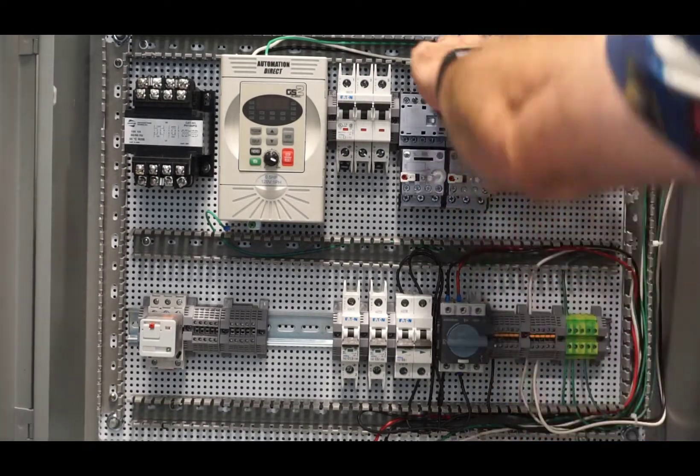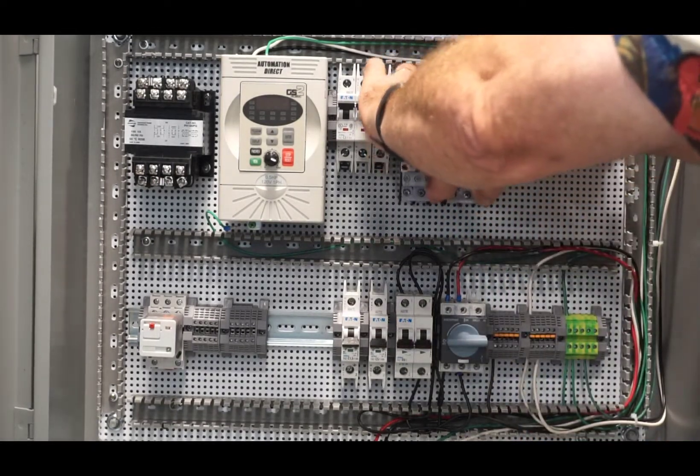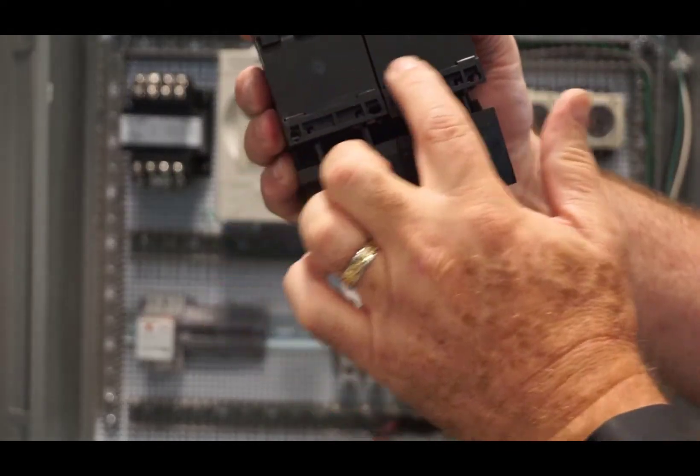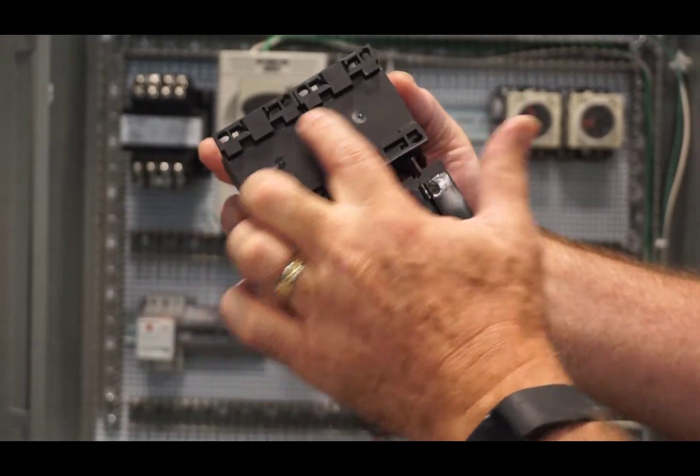Next is the reversing starter that's shown here. You push down and pull up on the bottom, or pull out, and it just comes right off. Those little clips hold them onto the DIN rail.